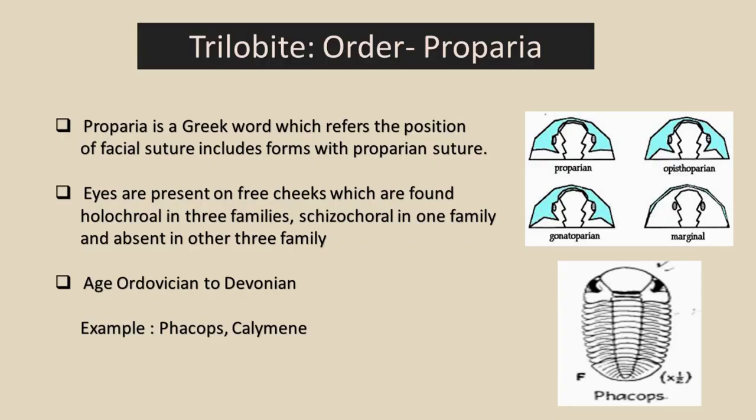First I want to discuss Order Proparia. Proparia is a Greek word which refers to the position of the facial suture. Facial sutures are three types: proparian, gonatoparian, and opisthoparian. Note that the Proparia order has only the proparian suture.